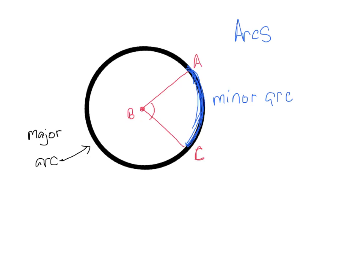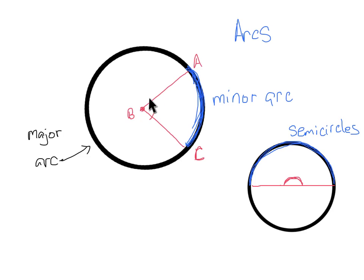Or the other option is this. Our central angle could go straight across here. So our central angle could actually be 180 degrees. In which case, our two arcs, there's no longer a major arc because they're both the same size. So instead of having a major arc and a minor arc, we now have two arcs that are called semicircles. Alright, so again, either you have a central angle creating a minor arc and a major arc, or you have a central angle of 180 degrees, which creates two semicircles.